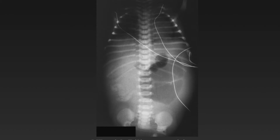This baby presenting with bilious vomiting has a very distended upper abdominal loop. In the right flank, we notice a collection of calcifications that looks like collapsed bowel. This is a baby with ischemic bowel. When ischemic bowel persists for several weeks, it can become calcified and have this appearance.